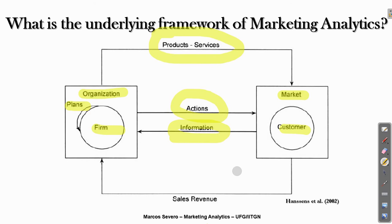The main output from this framework is performance — in this case, sales revenue or another measure of marketing performance — which marketers are generally aiming at through these marketing actions. This illustration basically defines the framework of marketing analytics: the main inputs and the main outcome of marketing analytics.